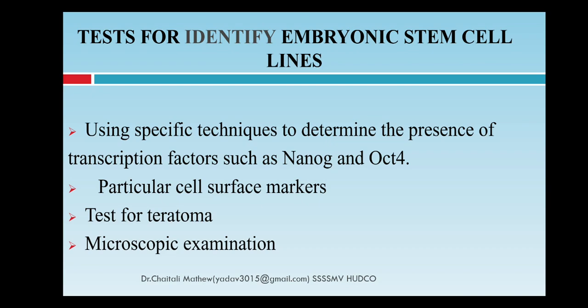Tests that can be applied to identify embryonic stem cell lines include: the presence of transcription factors such as Nanog and Oct4, which are specific proteins; particular cell markers or surface markers that have been applied to identify embryonic cultured cells; and the teratoma test, which can be done in the lab. Microscopic examination is also a common method to identify embryonic stem cells.